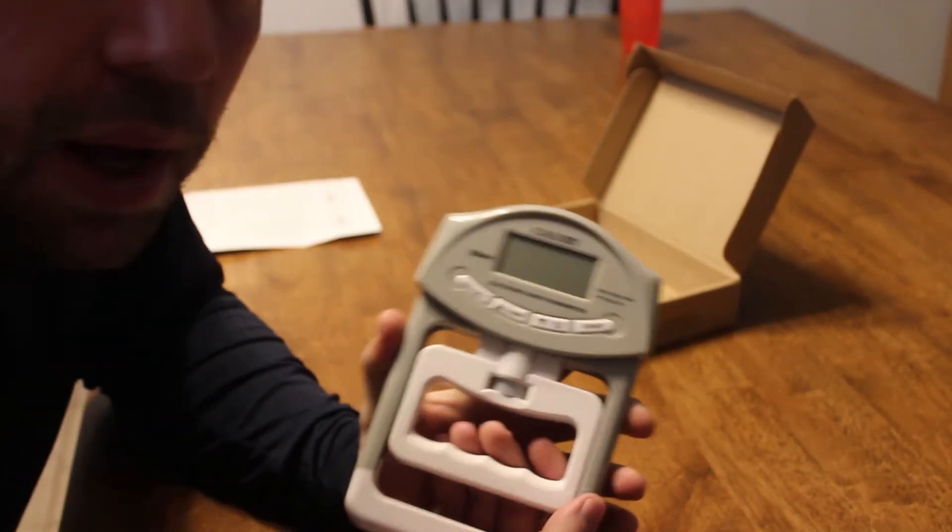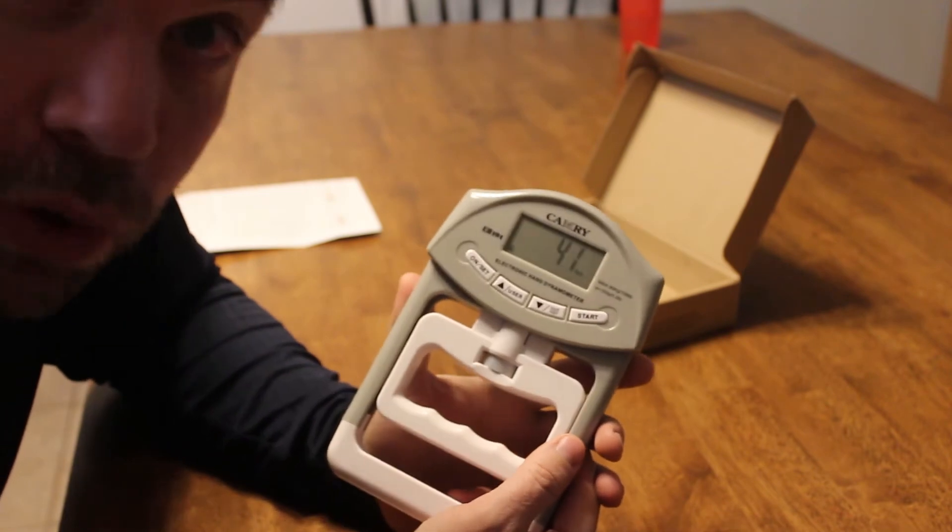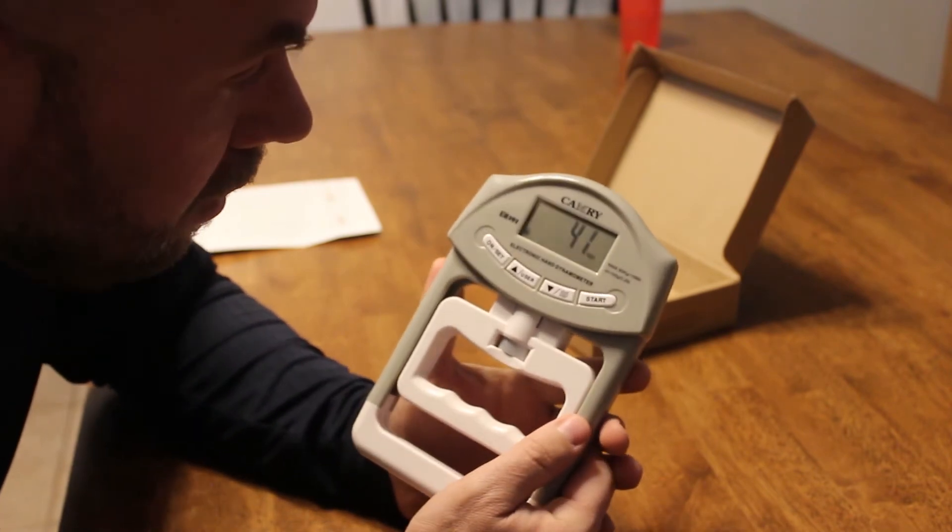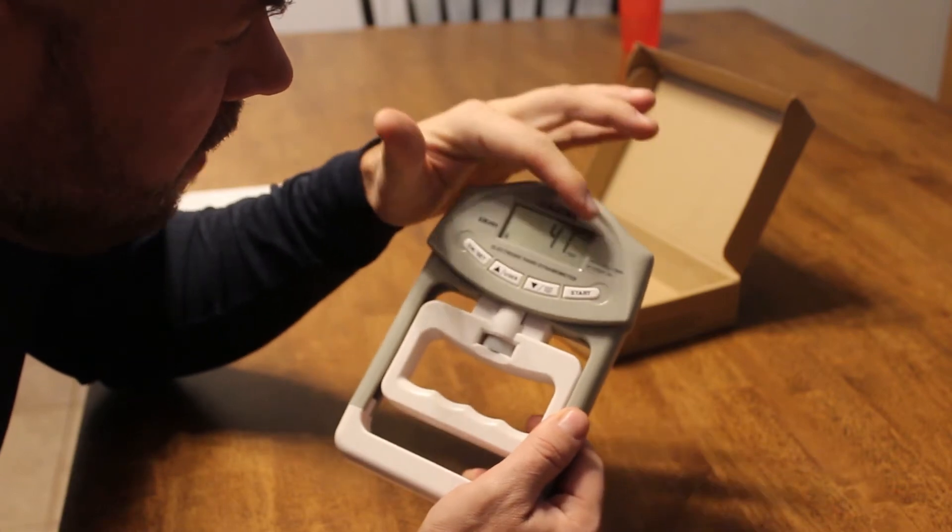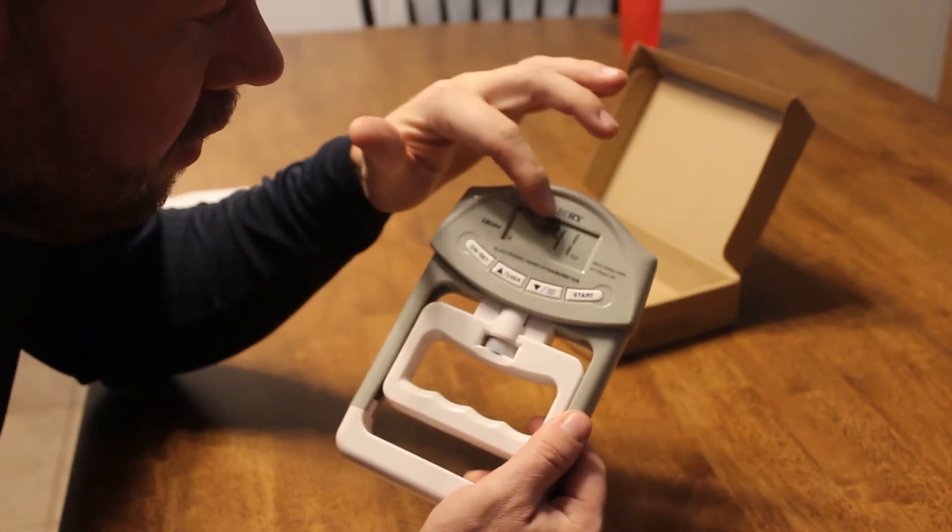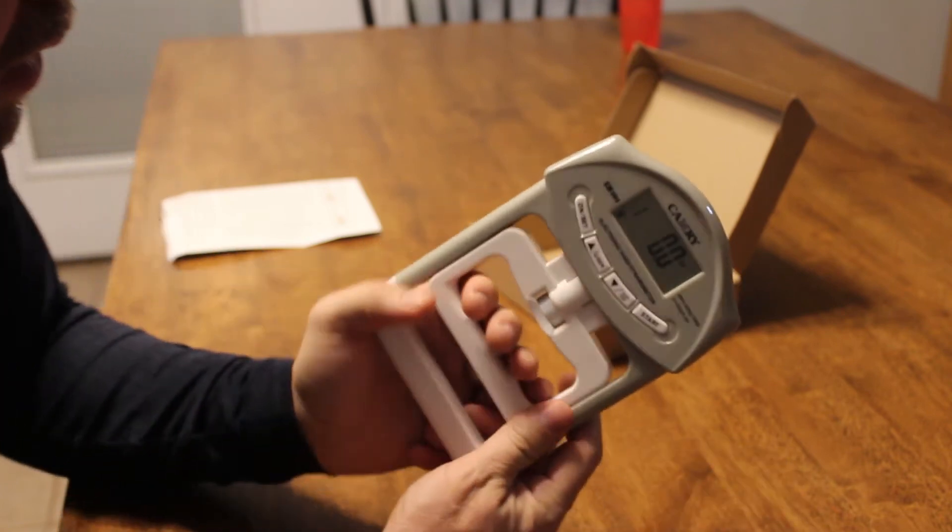All right. So I went ahead and I set my... I'm no longer a 25-year-old girl. Now I'm a 41-year-old male and I'm user one. So from the default, when you hit onset, it will go to the user profile. Then you hit start to try it and then you just squeeze.